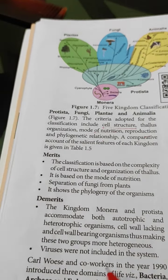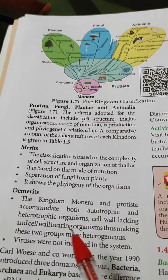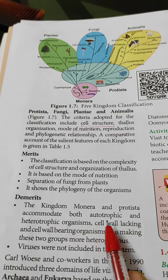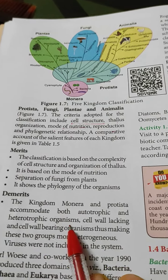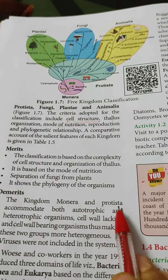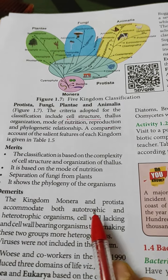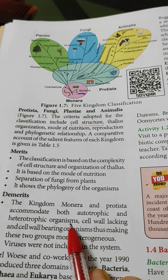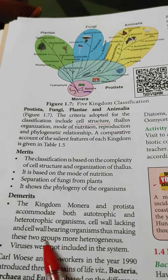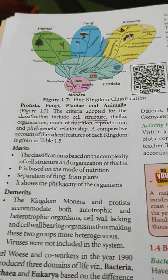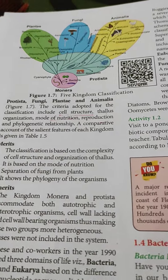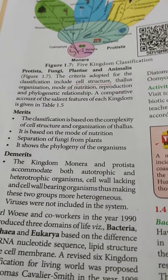The disadvantages or demerits: the kingdoms Monera and Protista accommodated both autotrophic and heterotrophic organisms, as well as cell wall-lacking and cell wall-bearing organisms, thus making these two groups more heterogeneous. Additionally, viruses were not included in this system.